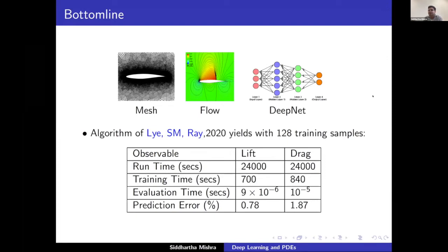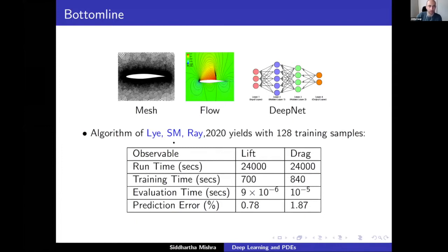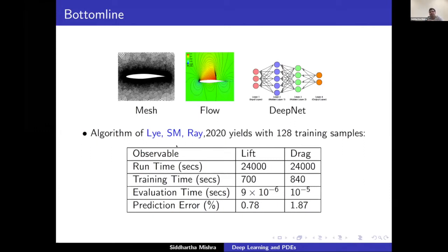Q&A: Was the 50% drag reduction result verified with a full CFD run on the final design? Yes—the final design was validated with a CFD simulation, and the error was less than 1% for both lift and drag.